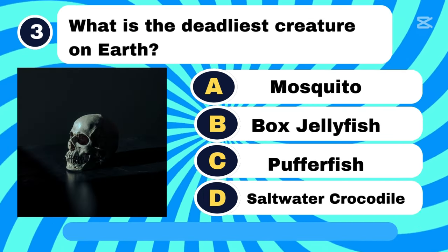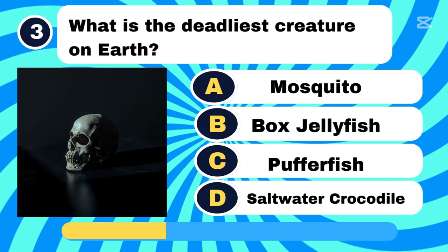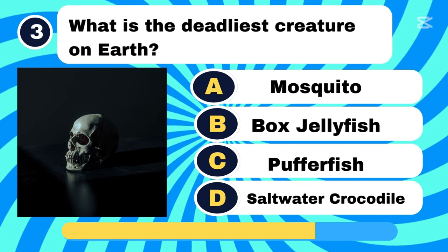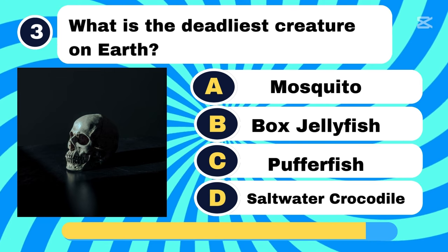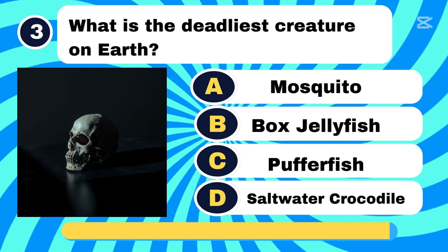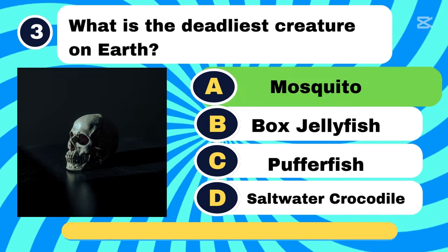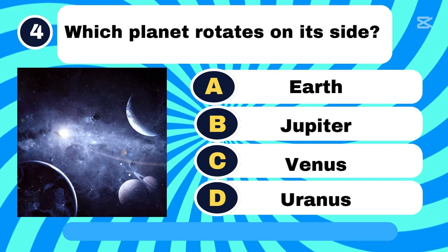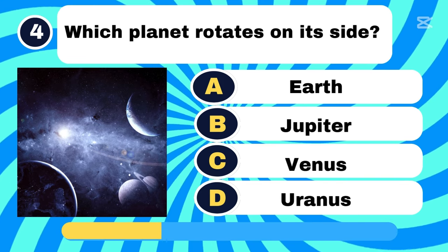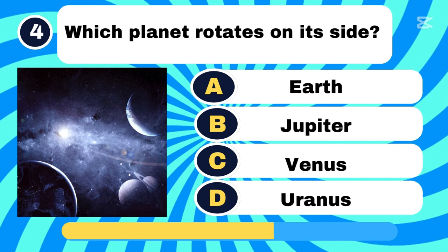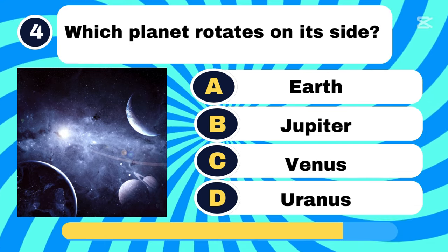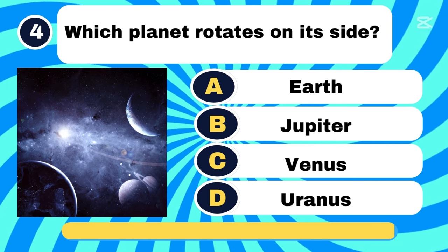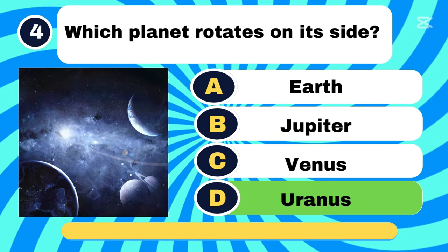What is the deadliest creature in the world? Letter A, Mosquito. Which planet rotates on its side? Letter D, Uranus.